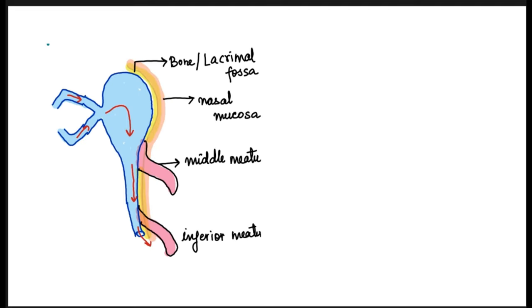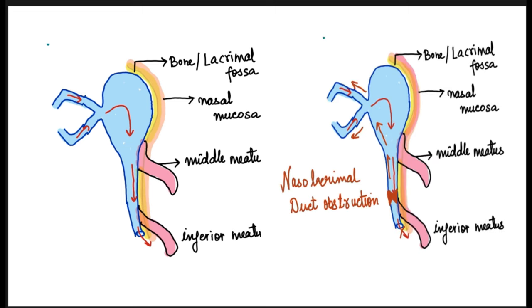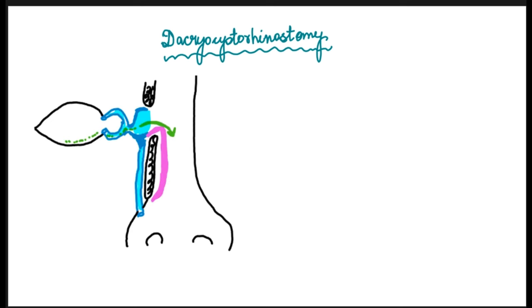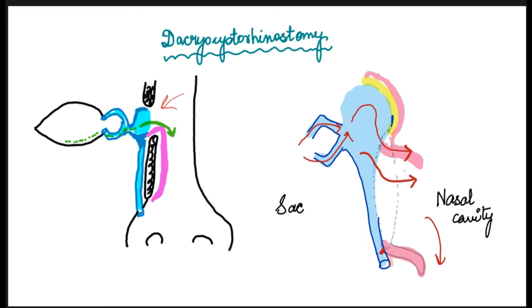What is DCR? We are all familiar with the flow of tears through the lacrimal apparatus. With obstruction at the nasolacrimal duct level, tears will flow back into the eye, leading to watering or epiphora. In dacryocystorhinostomy, we facilitate a new opening or ostium for the flow of tears directly from the sac into the nasal cavity. This ostium is formed in the area of the lacrimal sac and extends into the lateral wall of the nose, specifically in the area of the middle meatus, bypassing the blocked nasolacrimal duct.